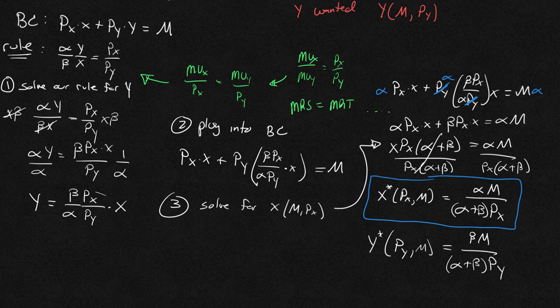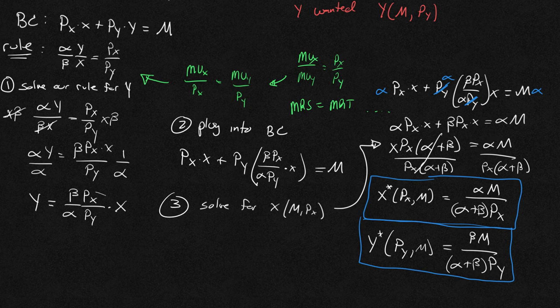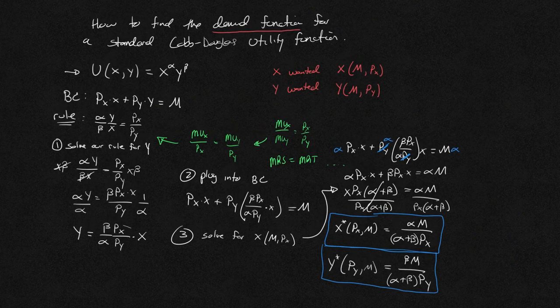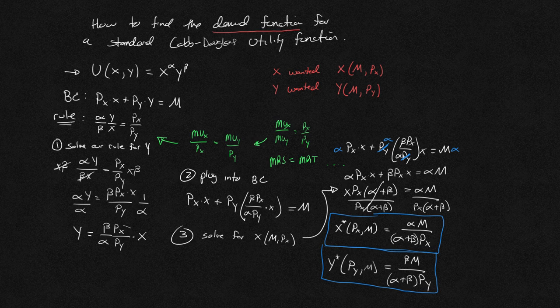And you can go ahead and do the math out on this yourself. You can leave me a comment if you need me to do that math out. But here, we're going to see exactly what my x star and y star will be, no matter what the rest of the numbers are. So if I have a standard Cobb-Douglas utility function with x to the alpha, y to the beta, we know that our demand function for x and y will always be these two things down here on the right.